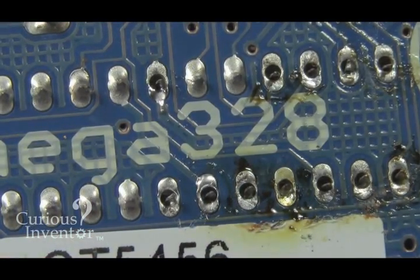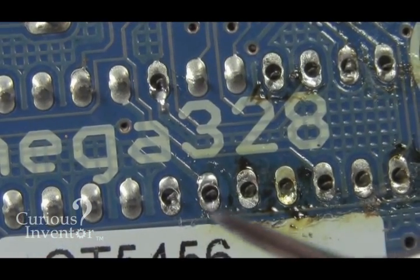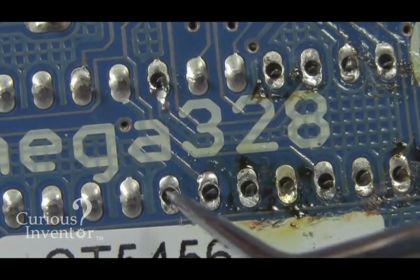If the joint is mostly empty, it will be difficult to get the remaining solder completely molten with the iron, and also difficult for the solder sucker to create much of a vacuum.